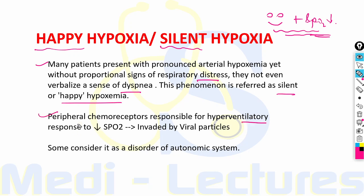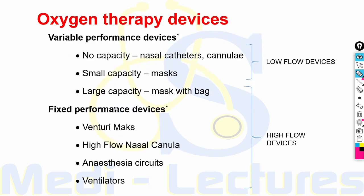The reason for happy hypoxia is that the peripheral chemoreceptors are responsible for the hyperventilatory response to a decrease in SpO2, but these chemoreceptors are invaded and destroyed by the viral particles. Some also consider it as a disorder of the autonomic system.